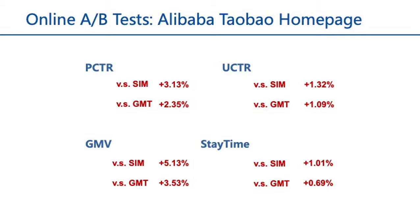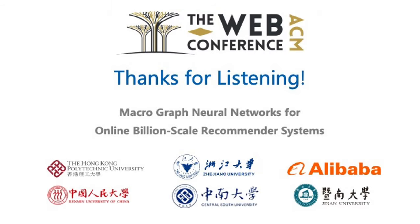In conclusion, MacGN represents a significant leap forward in recommender system technology, offering a scalable, efficient, and more accurate solution. We are excited about the potential it holds for transforming the landscape of online recommendations.